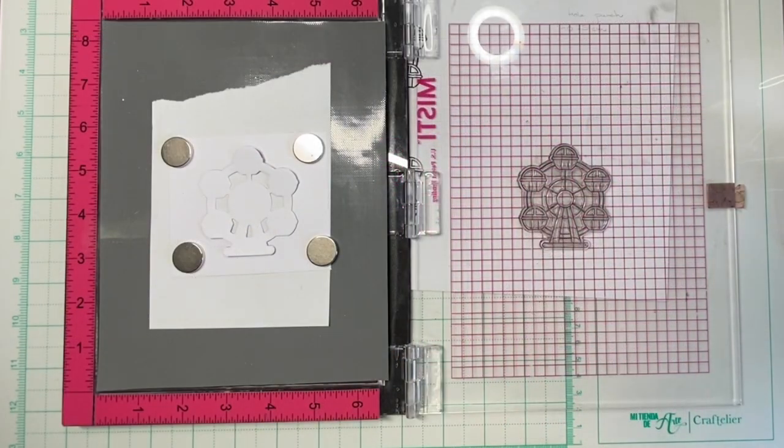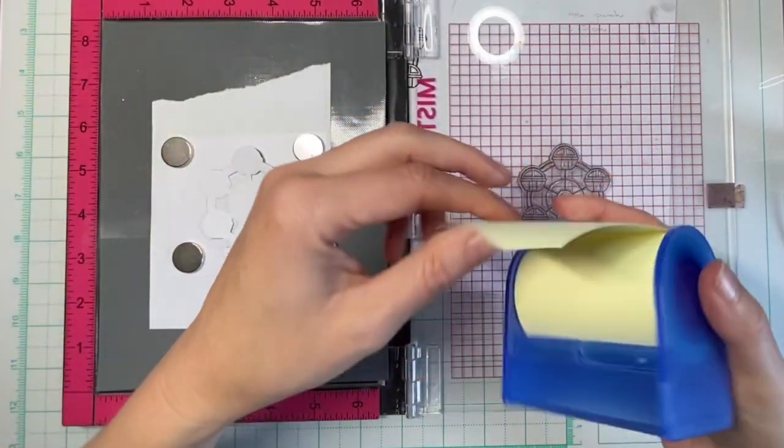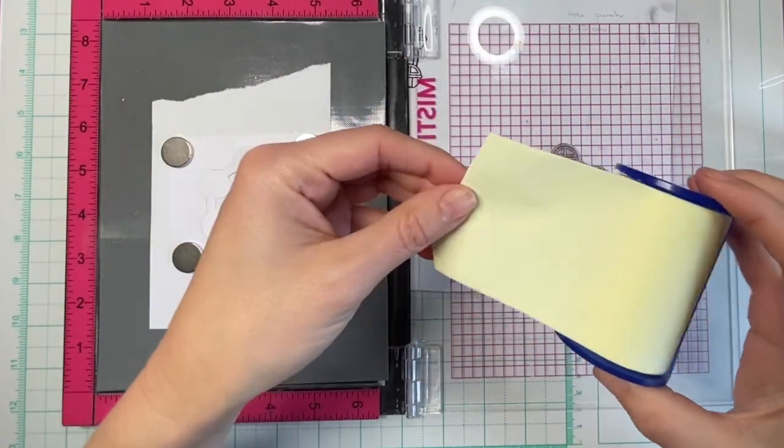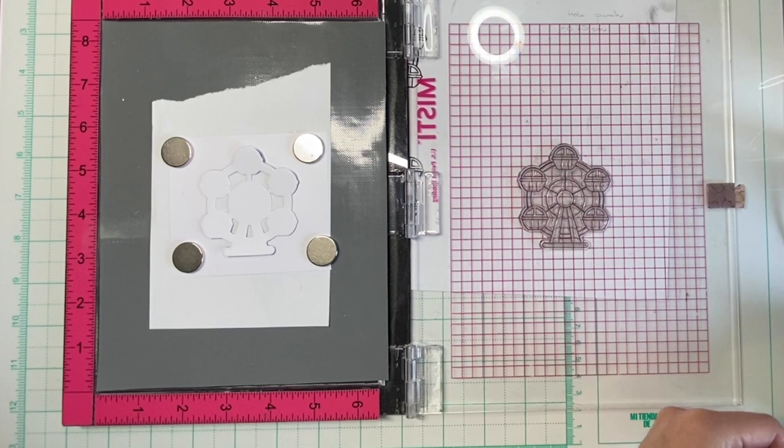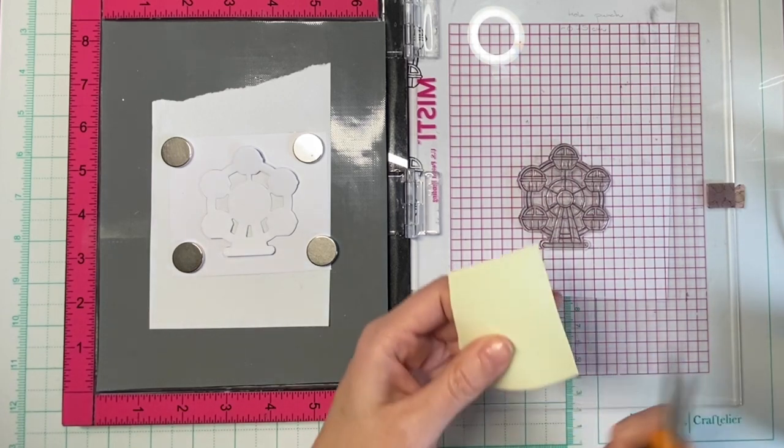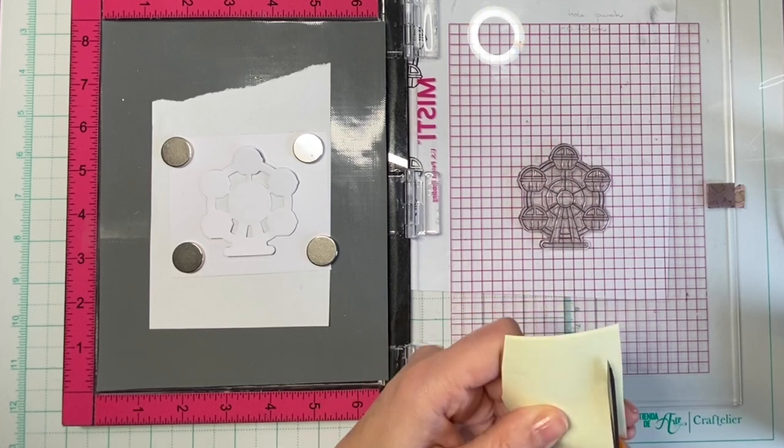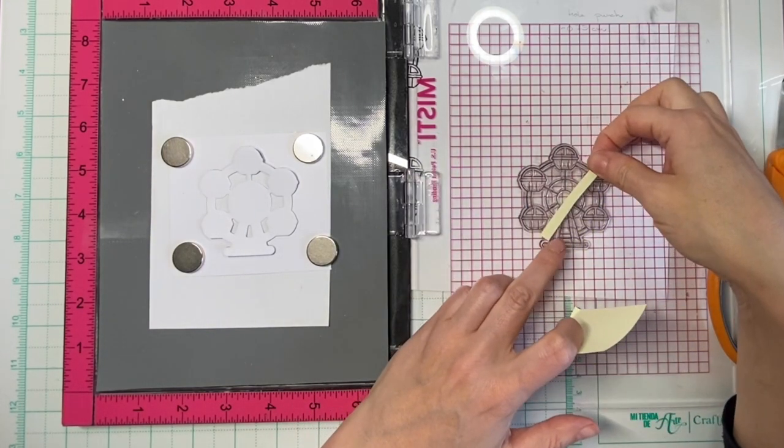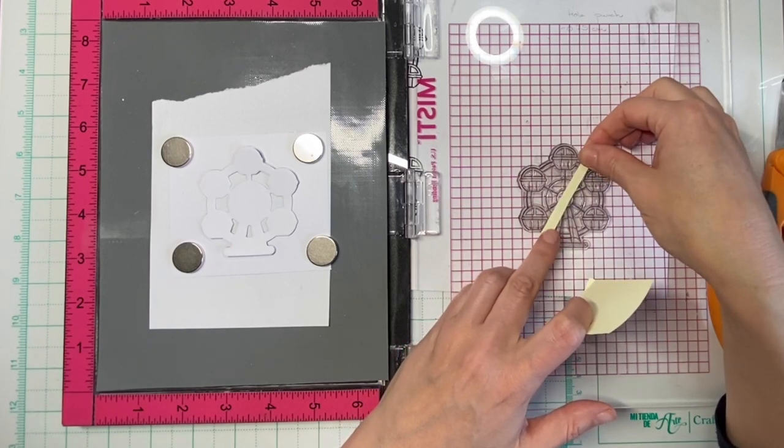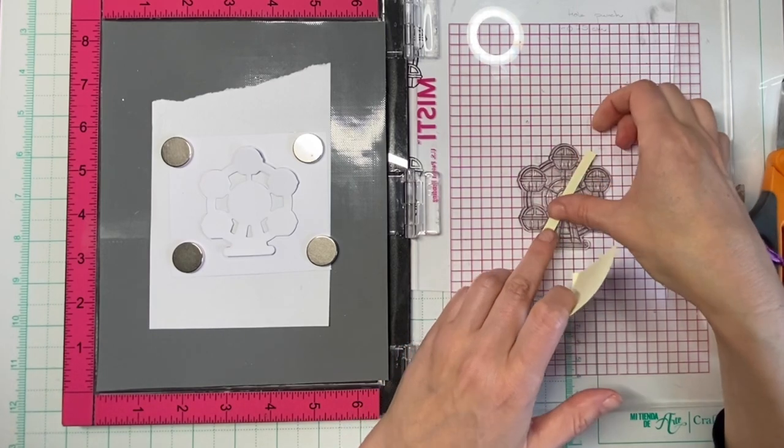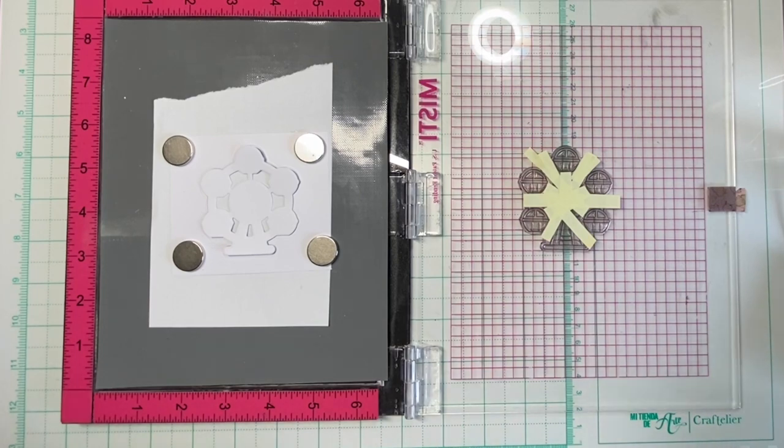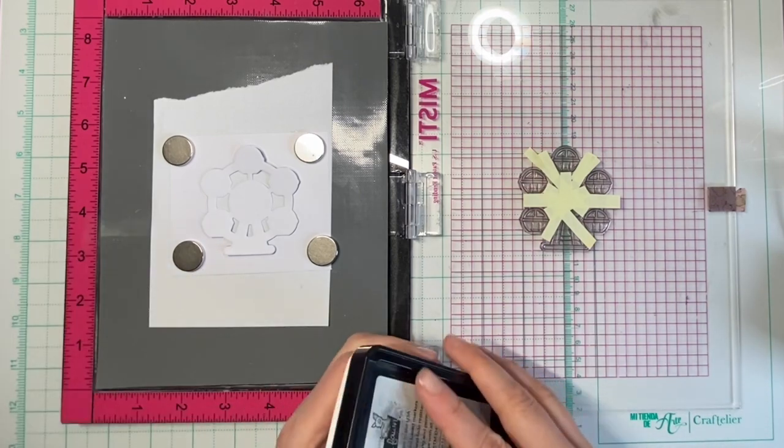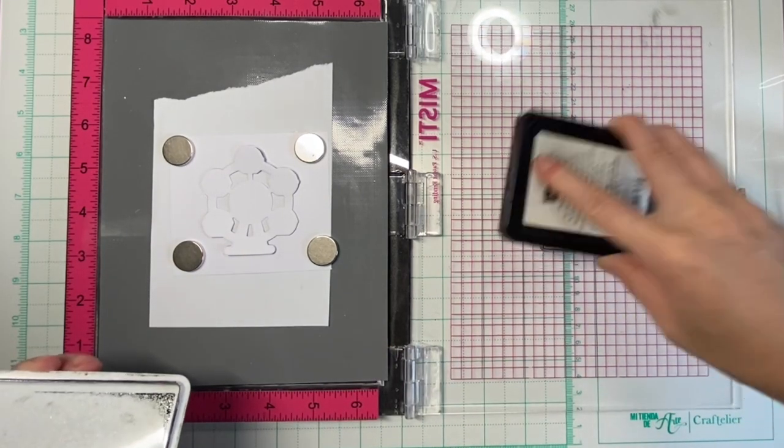Now I can mask off the parts of the image that I don't want to stamp. For that, I use this full-stick Post-it tape and cut it into pieces and place it onto my stamp.